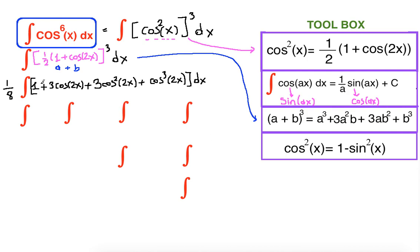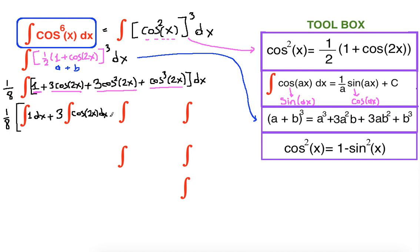Now we are going to break this integral into four integrals, with one eighth in front. Our first integral will be one, our second integral will be three cosine 2x, the next integral will be three cosine squared of 2x, and the final integral will be cosine cubed of 2x. Let's rewrite them as separate integrals: ∫1 dx, plus 3∫cos(2x) dx, plus 3∫cos²(2x) dx, plus ∫cos³(2x) dx.